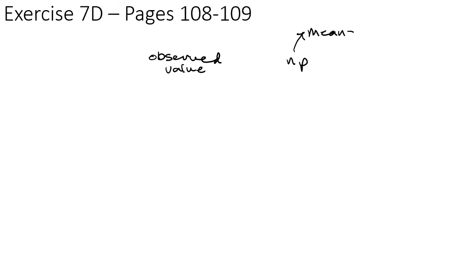You should now be able to complete Exercise 7D on pages 108–109 in the textbook. A quick recap: compare your observed value to n times p, which is the mean of the binomial distribution. If the observed value is less than the mean, investigate the lower tail. If the observed value is greater than the mean, investigate the upper tail. This saves you work — you only need to look at the tail that the observed value is closest to.